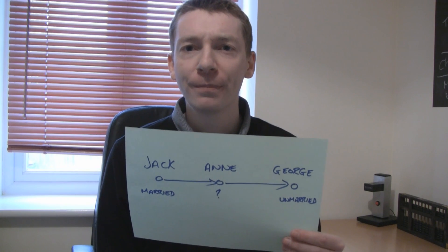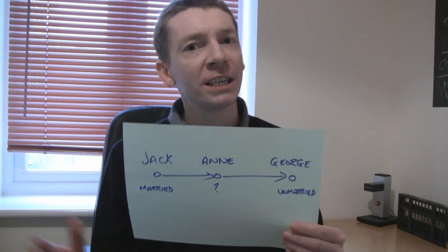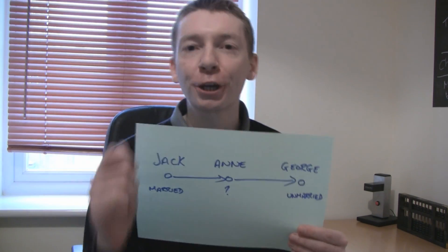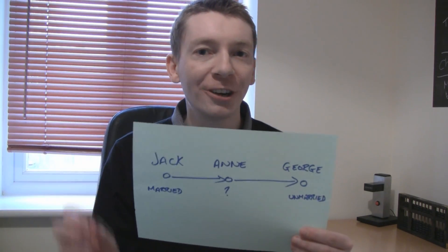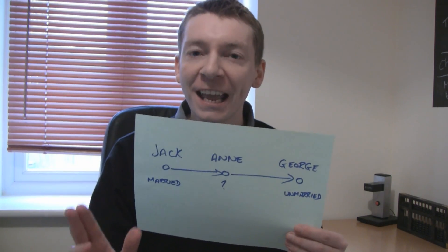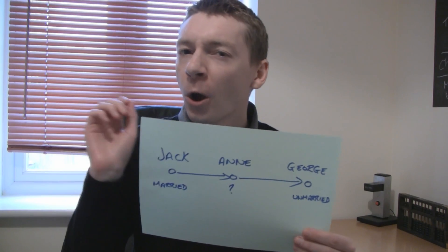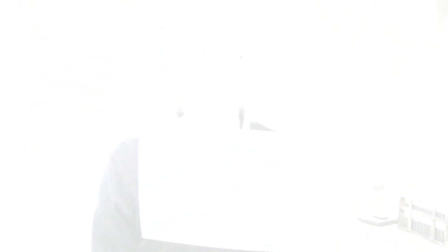The third problem is that the question doesn't say anything about Anne's marital status. Is she married or is she not married? Now this is the crux of the problem, because at first glance it does appear that the question is not giving you enough information, and so you think that it cannot be determined. But if we take our thinking just one step further, it turns out that we actually can come up with an answer. If you think about it, there are only two possibilities here: either Anne is married or Anne is not married.